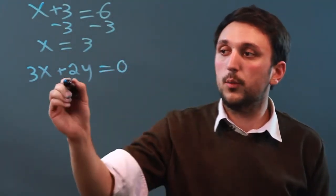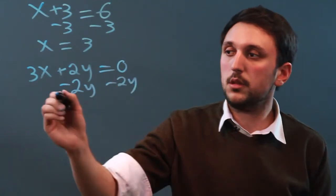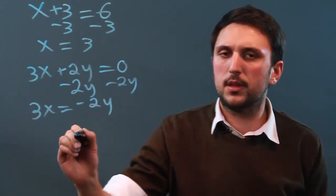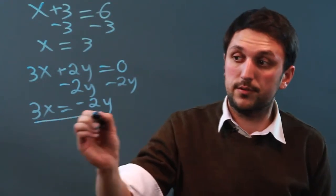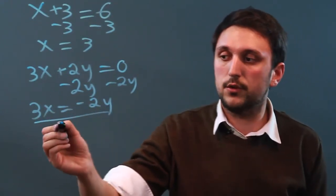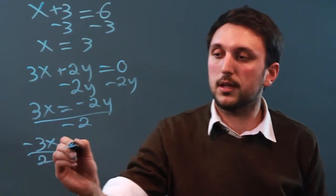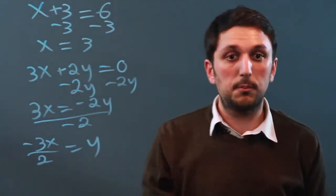Well, we can subtract 2y from each side, giving us 3x equals negative 2y. Then we can divide by the coefficient, negative 2. So we get negative 3x over 2 equals y, but that's it.